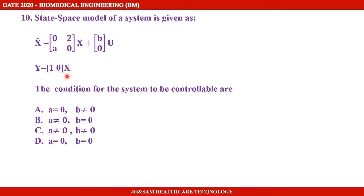The condition for the system to be controllable are: Option A — A equal to 0, B not equal to 0. Option B — A not equal to 0, B equal to 0. Option C — A not equal to 0, B not equal to 0. Option D — A equal to 0, B equal to 0.